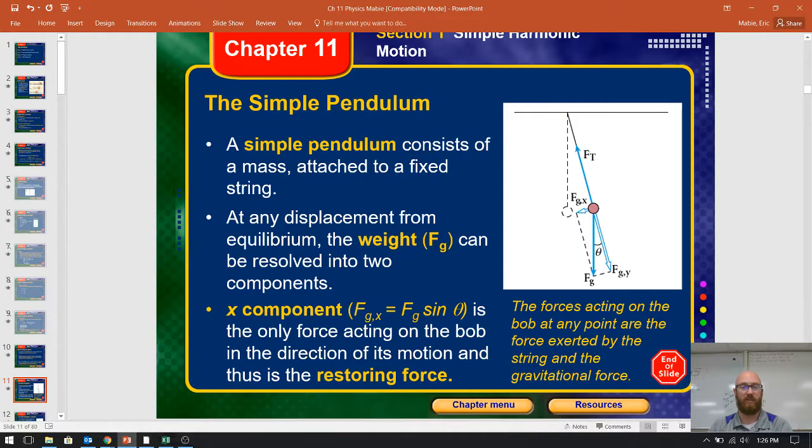F of G of X is actually the portion that we're concerned about because that is the restorative force or the restoring force. That is only the force due to gravity in the X direction. Everything else can be ignored. It's one of the reasons why we spent so much time on forces. F of G of X should be able to calculate fairly quickly. In this case, F of G is times the sine of theta, sine of the angle.